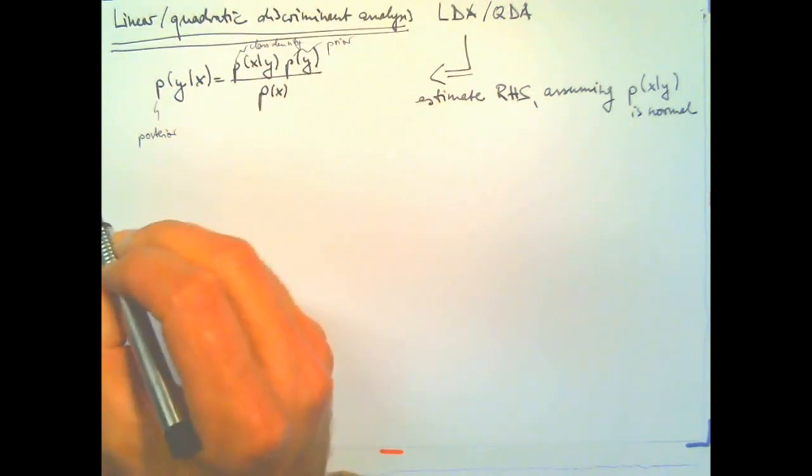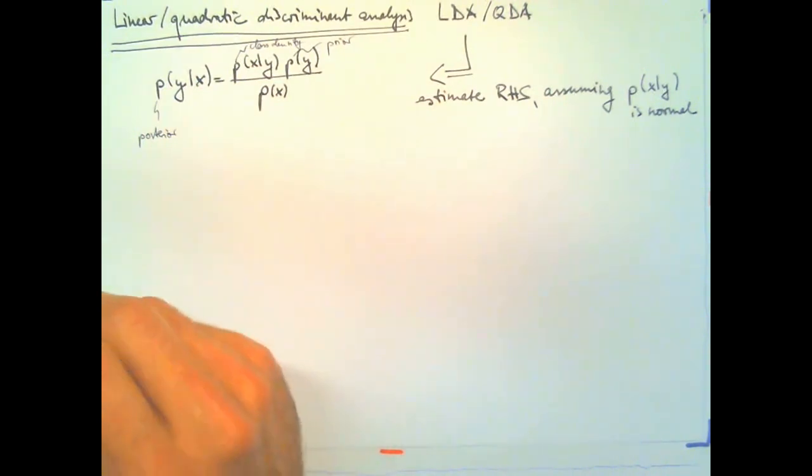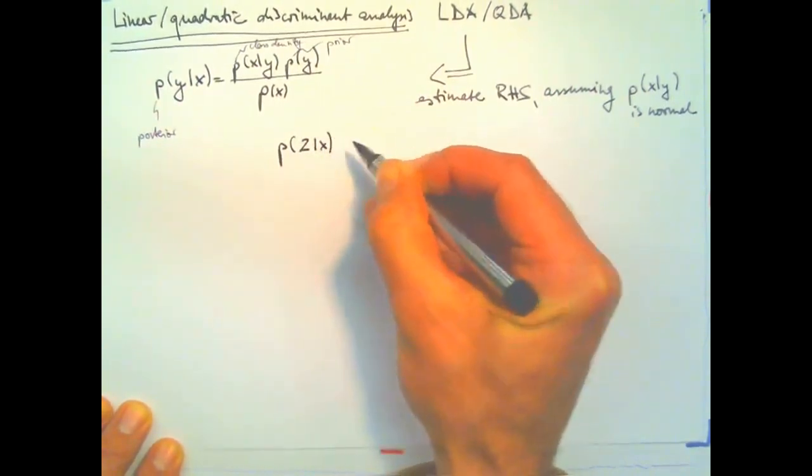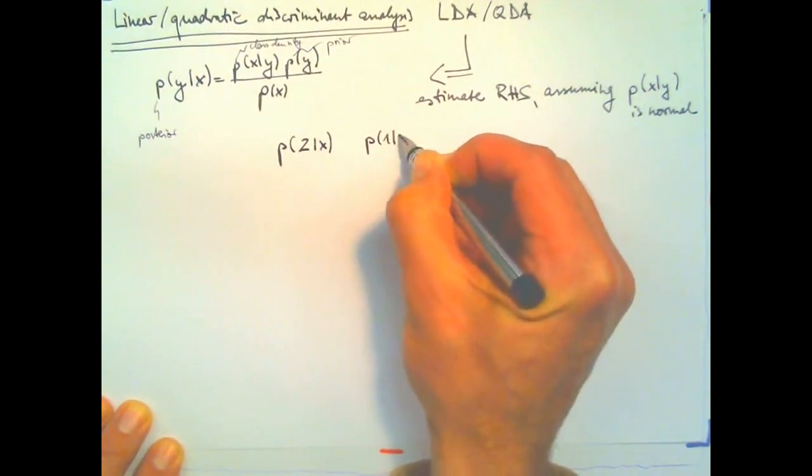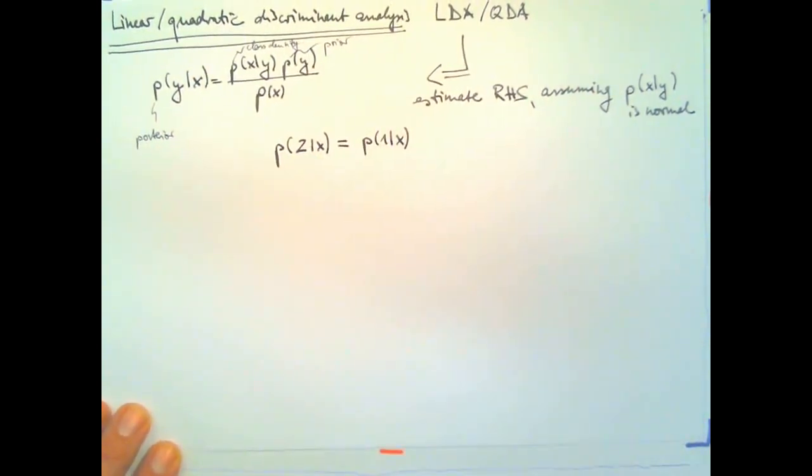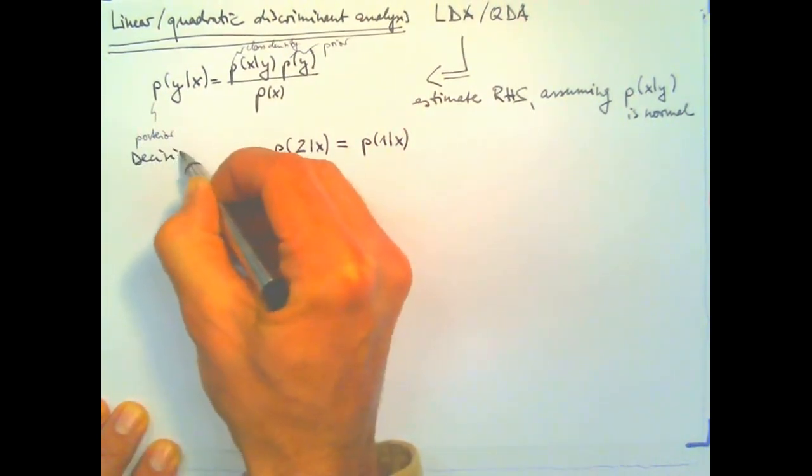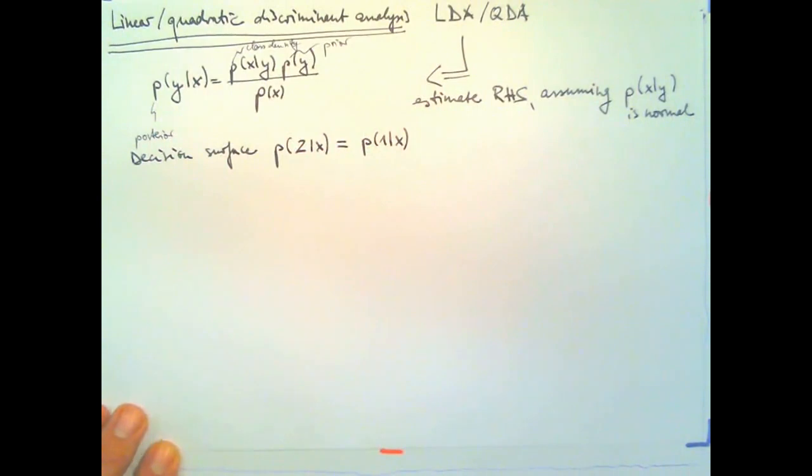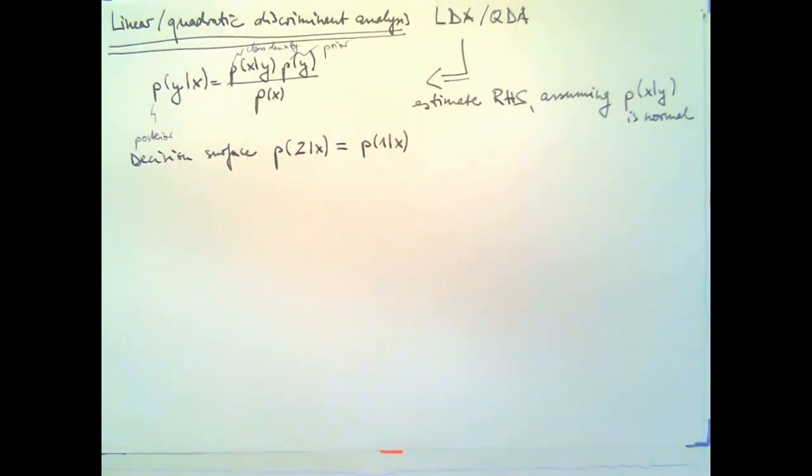Now, I will start with quadratic discriminant analysis and we want to find the decision surface or the decision rule. So, I will say we have two classes. We have the class two and we have the class one and the set of locations X at which these two posteriors are equally large, that is the decision surface.